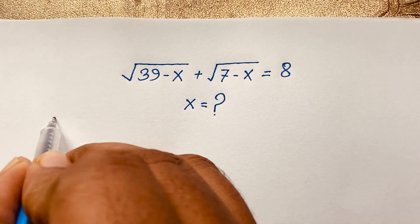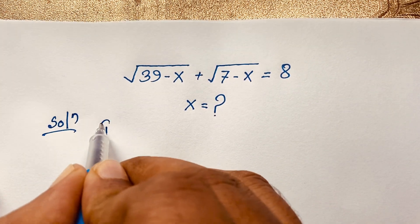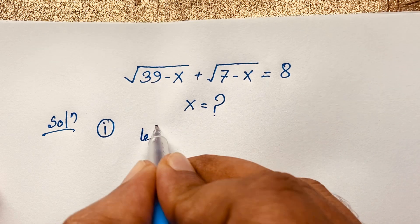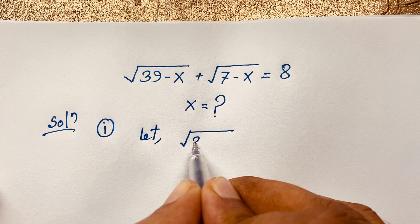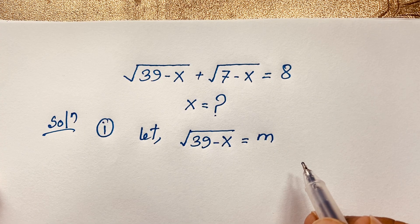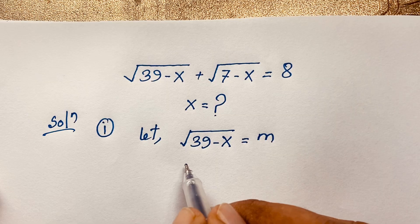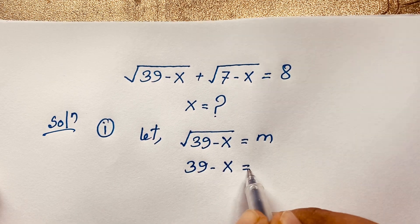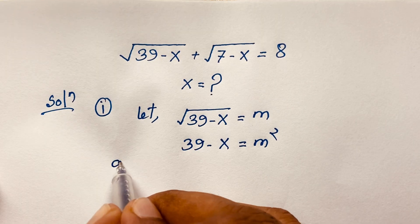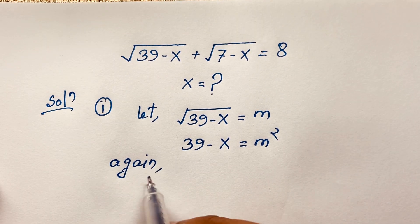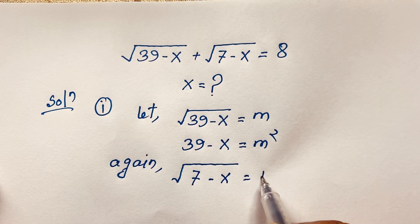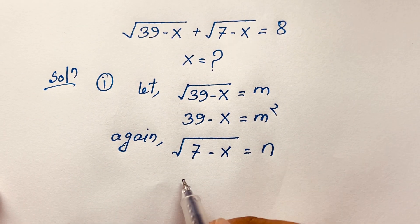I solved this question using two methods. This is our math solution. For our first method, we use the substitution method. First, let square root of (39 minus x) equal m. If we square both sides, we get 39 minus x equals m squared. Then let square root of (7 minus x) equal n.